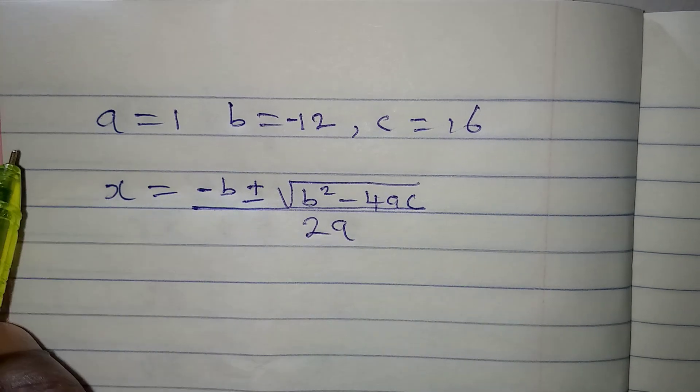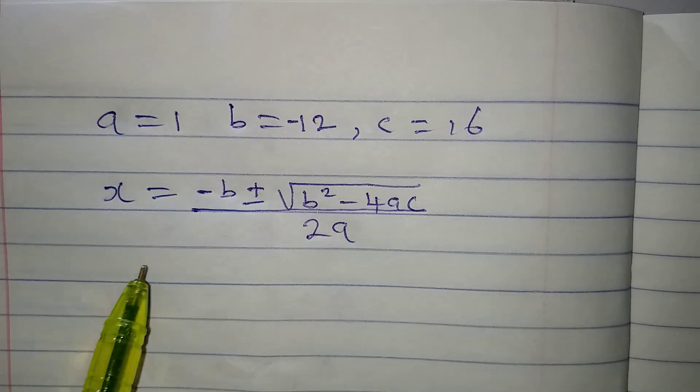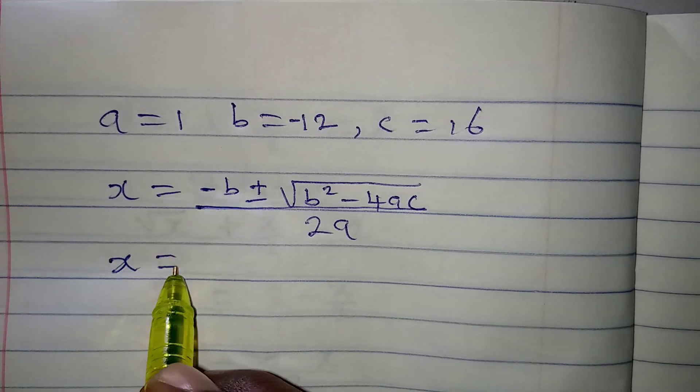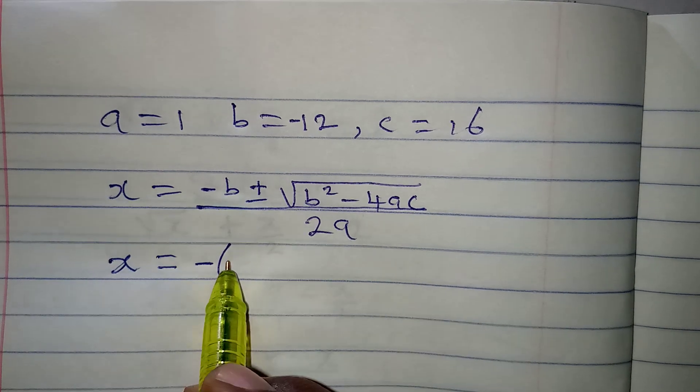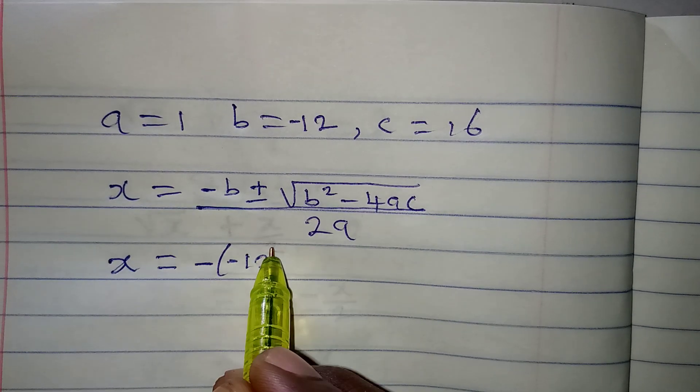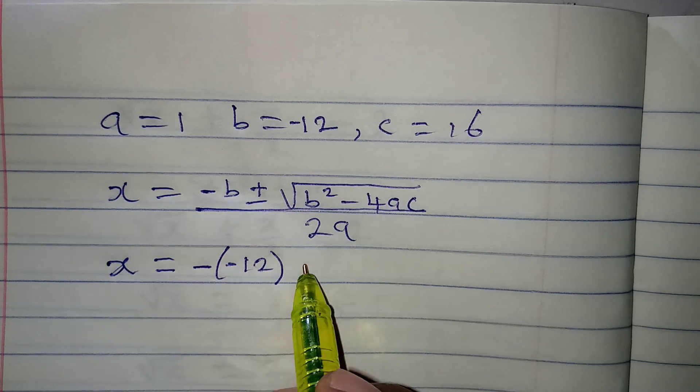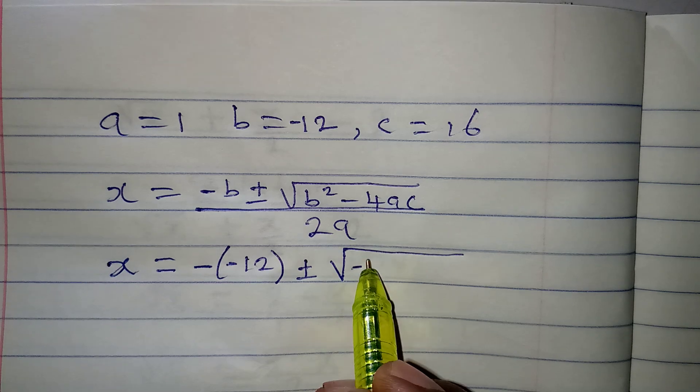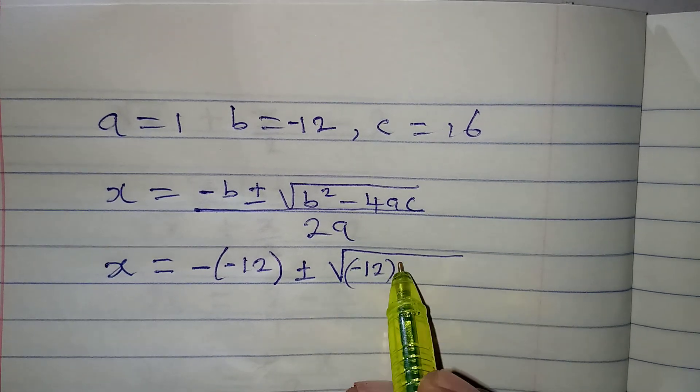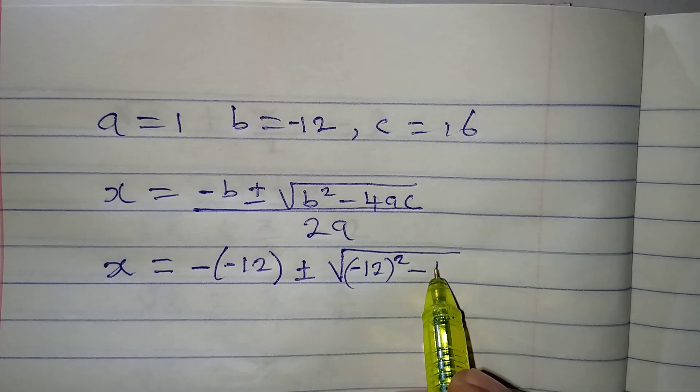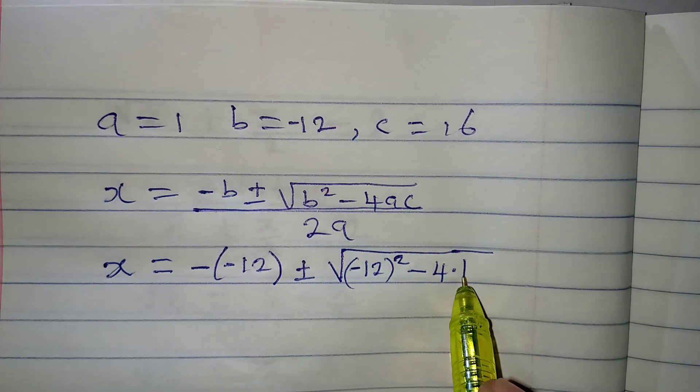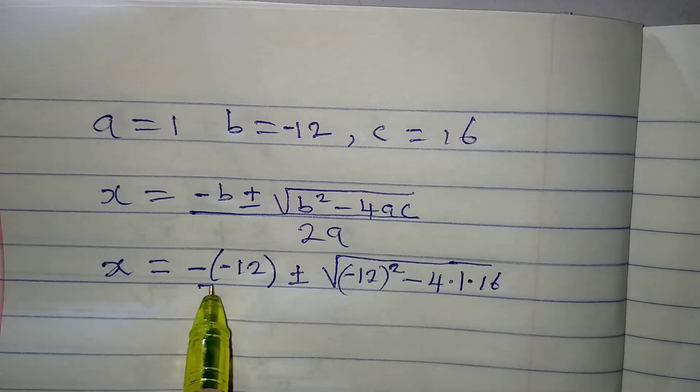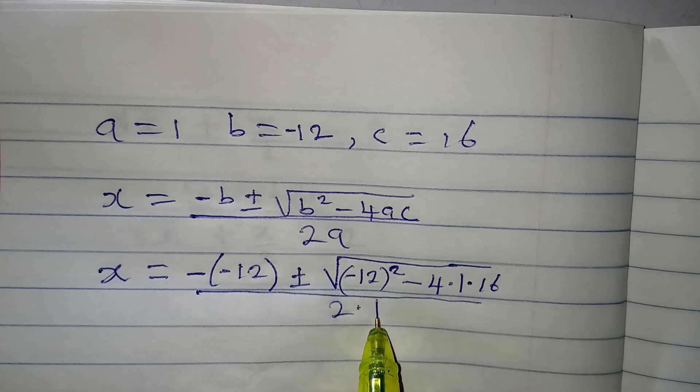Now, let's put a, b, c into this problem. x remains unknown. Minus b is now negative, negative 12. Then plus or minus b squared is minus 12 squared, then minus 4 times a is 1, then times c, which is 16. So the whole of this is over 2 times 1.